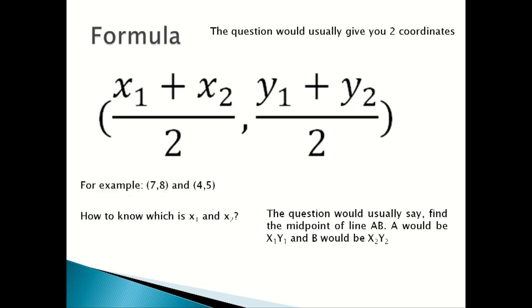For example, A is coordinates (7, 8) and B is coordinates (4, 5). x₁ would equal 7, x₂ would equal 4, y₁ would equal 8, and y₂ would equal 5.